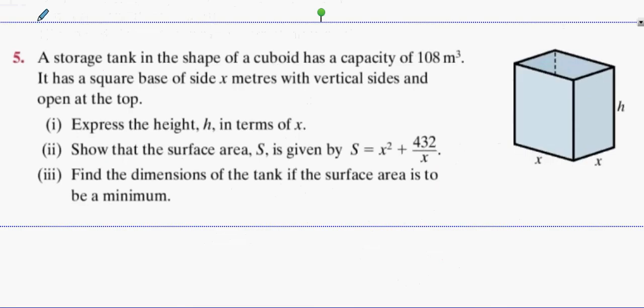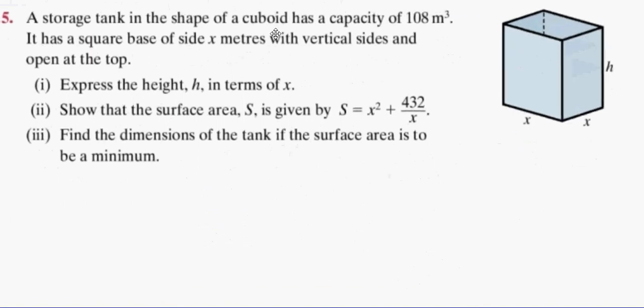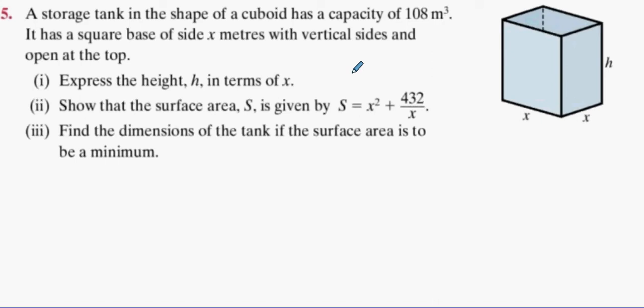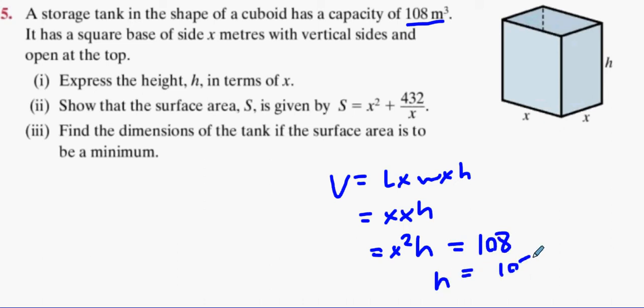Alright, question 5. It has a volume of 108. So if it has a volume of 108, volume is length by width by height. In this case it's going to be x times x times h, which is x squared h. x squared h equals 108. This means h on its own is 108 divided by x squared. Everybody happy with 108 over x squared for h?